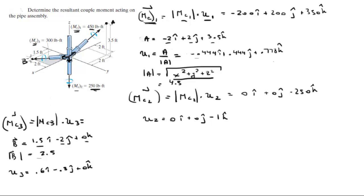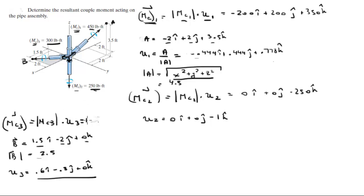Multiplying the magnitude of 300 by this unit vector gives the Cartesian vector form of the third moment. That comes out to be 180 i minus 240 j plus 0 k. So that is the third moment.